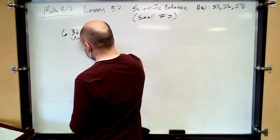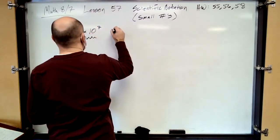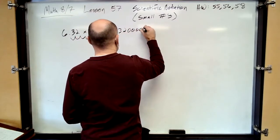Yep, because we've already gone 2, we need to go 5 more. 1, 2, 3, 4, 5. So, 6, 3, 2, 0, 0, 0, 0, 0.